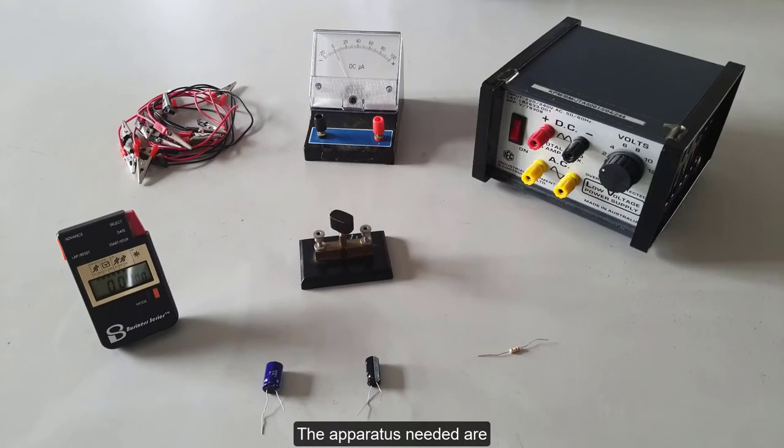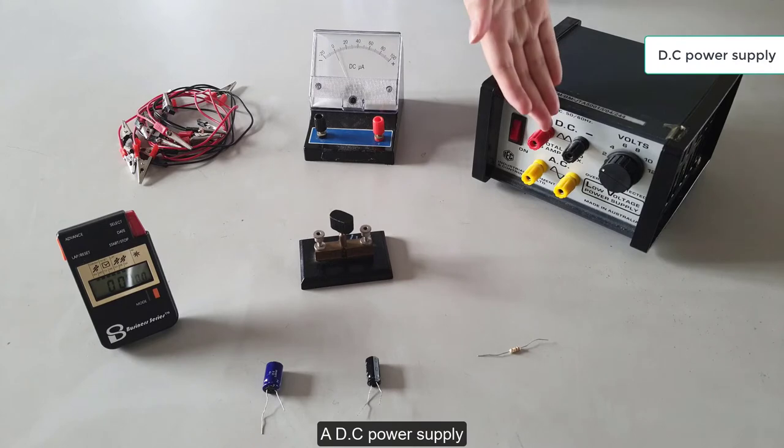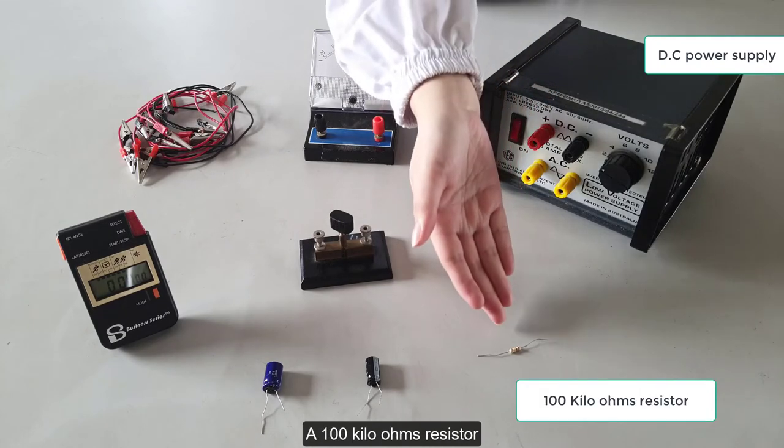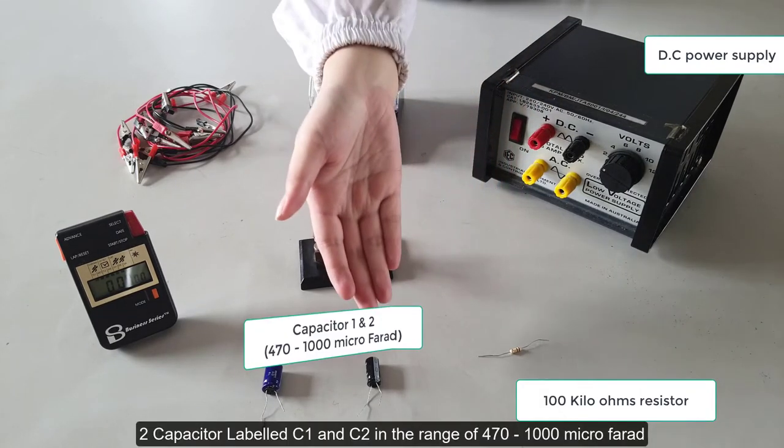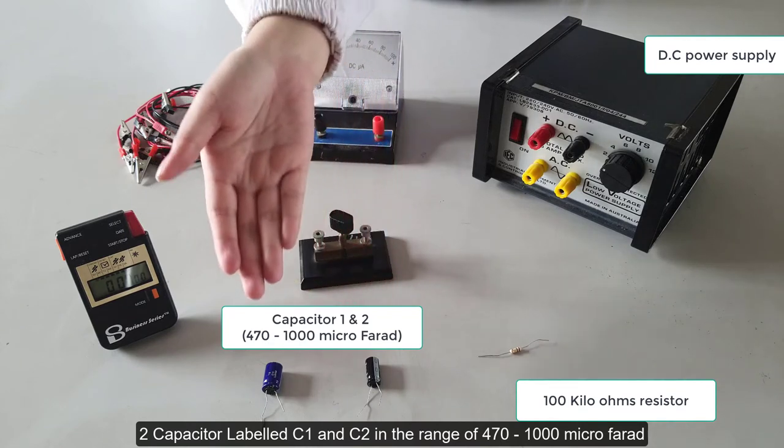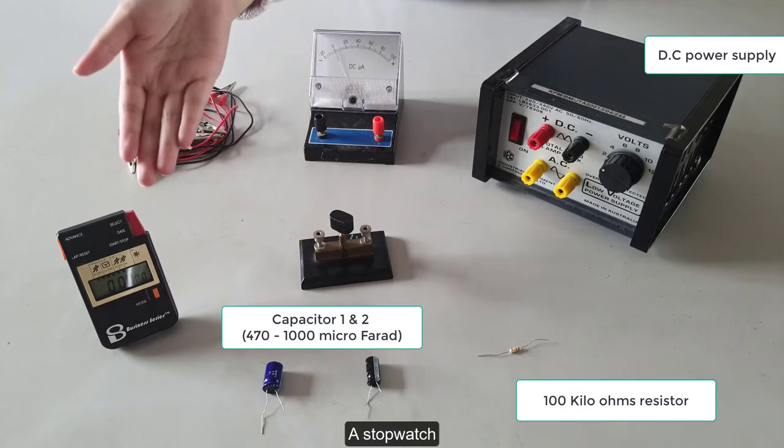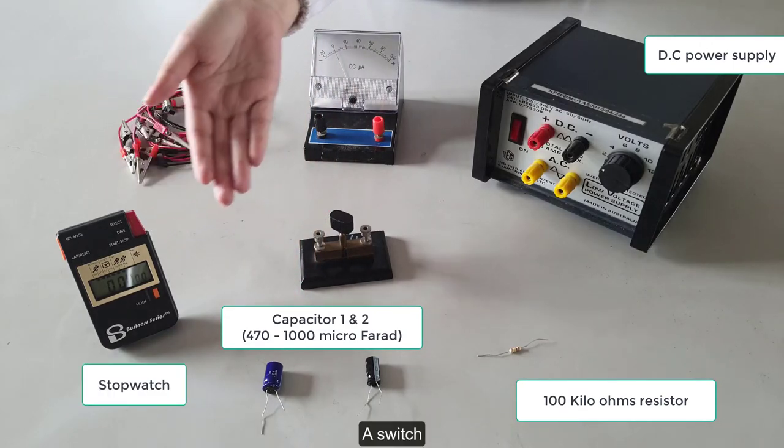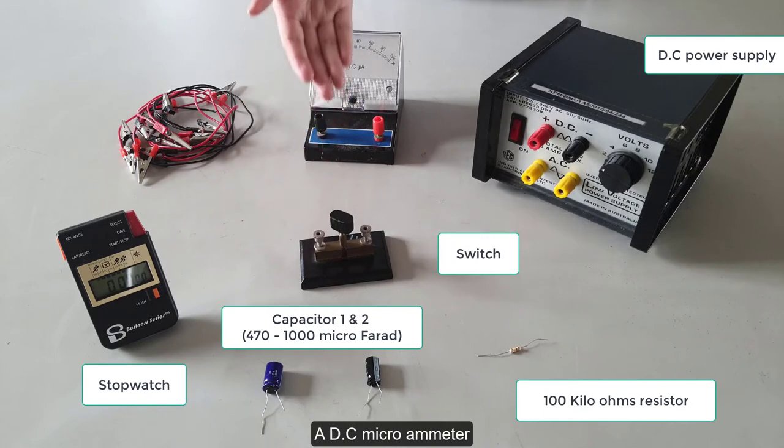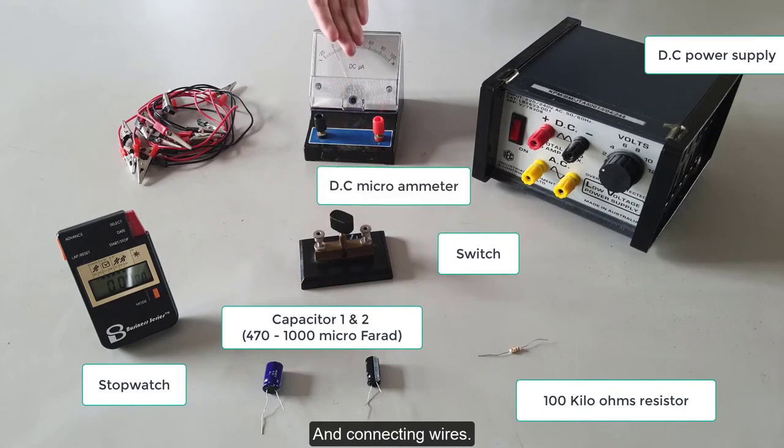The apparatus needed are a DC power supply, a 100 kilo ohms resistor, two capacitor labeled C1 and C2 in the range of 470 until 1000 microfarad, a stopwatch, a switch, a DC microammeter, and connecting wire.